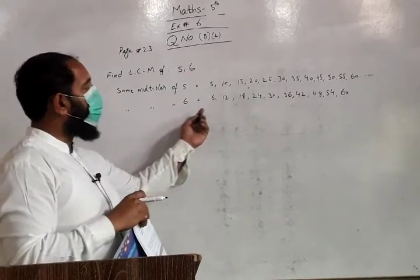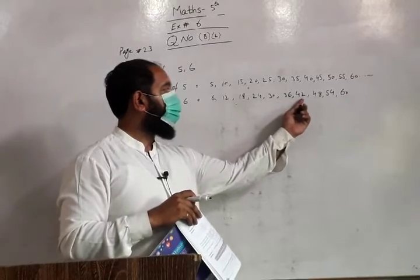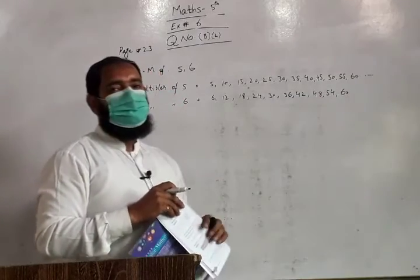Next digit, 6 multiple: 6, 12, 18, 24, 30, 36, 42, 60. We have multiple made.